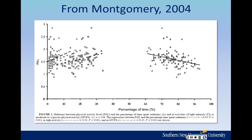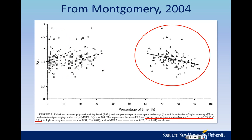Look at the data for percent time spent sedentary — there's some spread in terms of physical activity level. What can account for that variability? Some people have high activity levels, some have low. That is answered by taking that correlation and squaring it. So negative .33 times negative .33, then multiply by 100 to get a percentage. That will tell you how much variability in PAL can be accounted for by the percentage of time spent being sedentary.